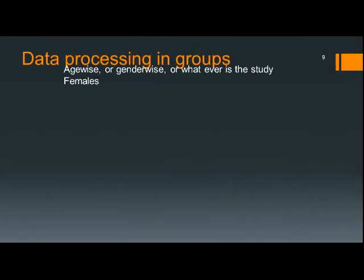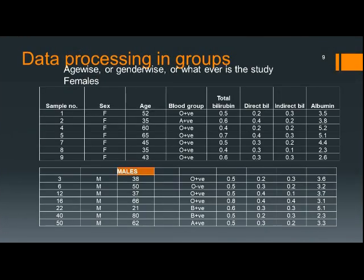The raw data is split into two groups: one is female and the other is male. The whole raw data for females is separated and for males is also separated. Then the data will be analyzed between the two groups.